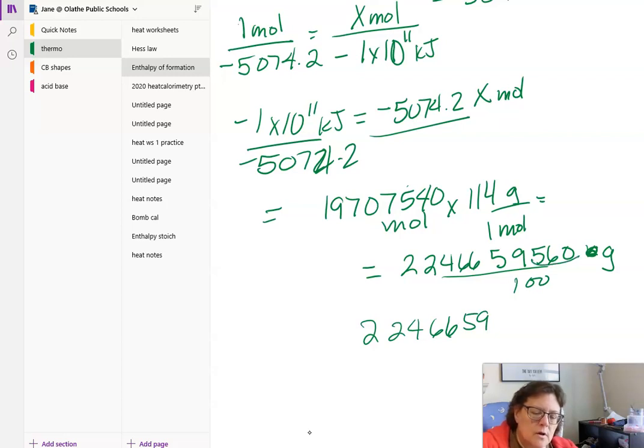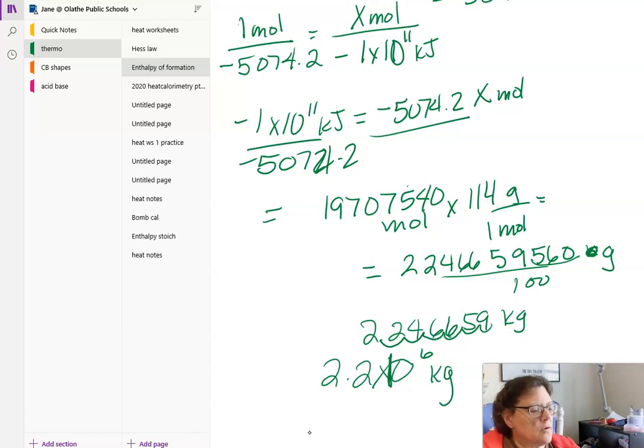Decimal over three. If we write that out in scientific notation as any sane person would do, 2.246 times 10 to the sixth kilograms. And I just checked in the book, and that would be correct.